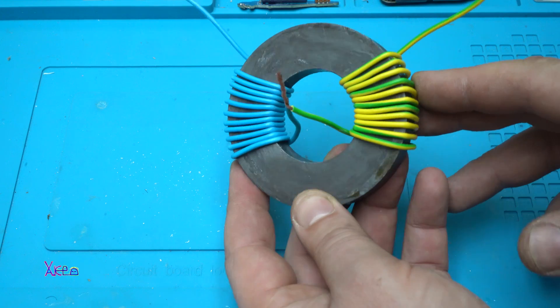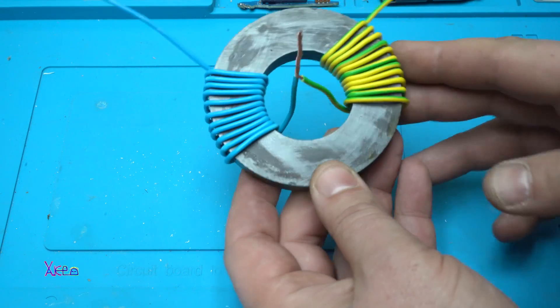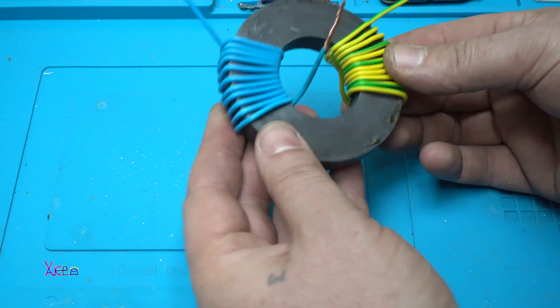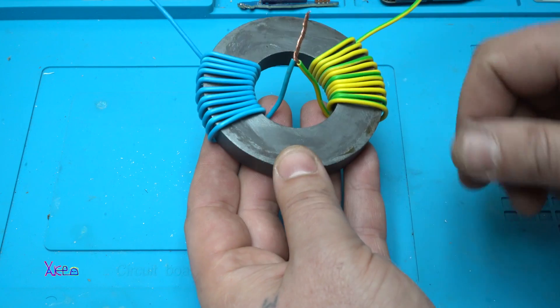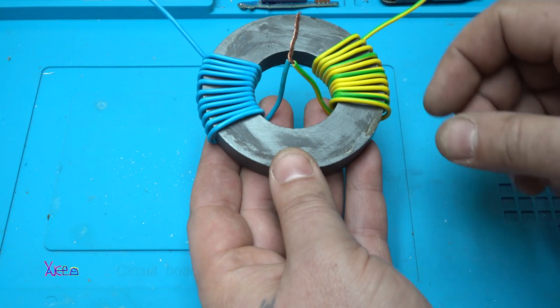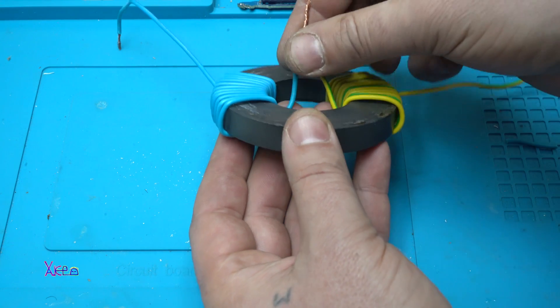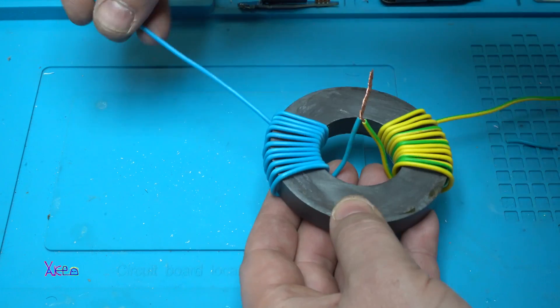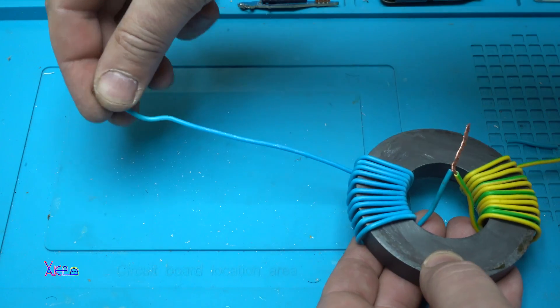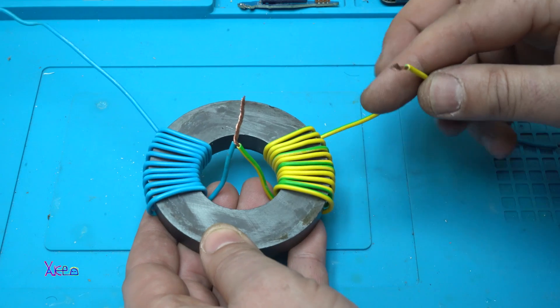If you're building a free energy device so far, you should get something like this. I have wound two wires from the left and from the right side, and in the middle those wires are twisted together. We have one end here and the other end here.